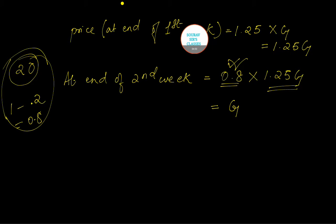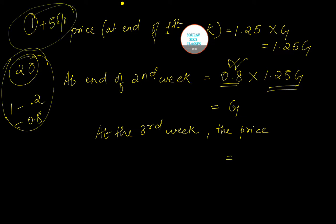And at the end of the third week, the price is increased by 5 percent. So if one is the total, you have to increase it by 5 percent, so you add 0.05 to this. It becomes 1.05 times G, so this becomes 1.05G. This is the value or the price of gold at the end of the third week. That means the correct answer to this particular question will be answer C.